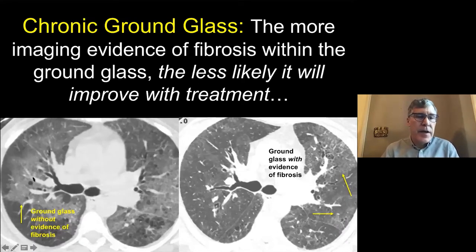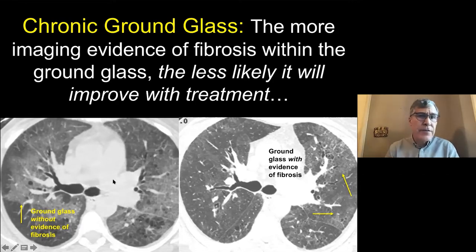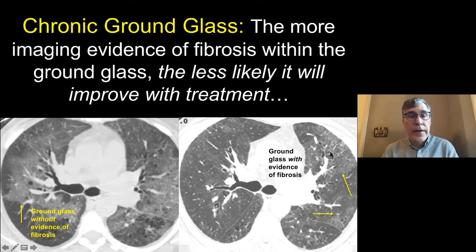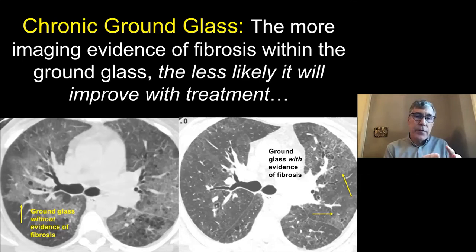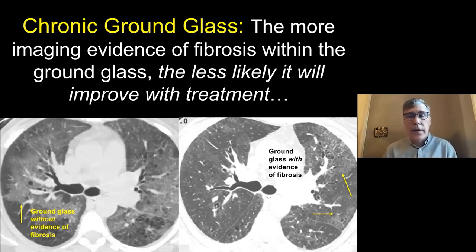A patient with ground glass and not much imaging evidence of fibrosis was treated with corticosteroids, and a lot of it improved — but some areas didn't go away. The areas that persisted showed ground glass with evidence of fibrosis within it: traction bronchiectasis and irregular visceral pleura. The more evidence of fibrosis within the ground glass, the less likely it will improve with therapy.